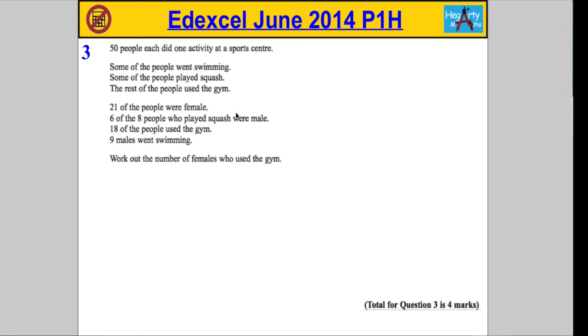Okay, question three. We're told that 50 people did one activity at a sports centre. Some people went swimming, some played squash, the rest went to the gym. 21 of the people were female, 6 of the 8 people who played squash were male, and 18 people used the gym. 9 males went swimming. We're asked to work out the number of females who used the gym.